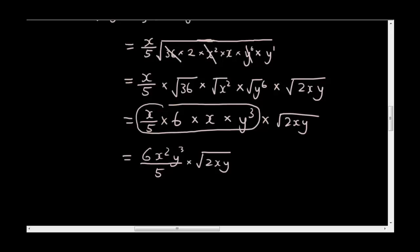And you don't need to write the times symbol. So to rewrite all of this, it's just 6x squared y cubed times square root of 2xy, all over 5. Hopefully you guys learned something from this tutorial — see you guys next time.